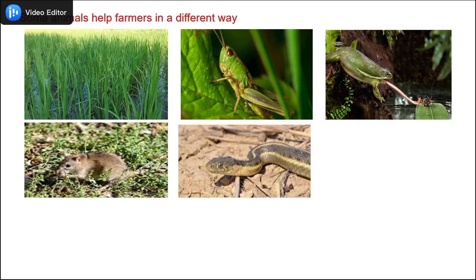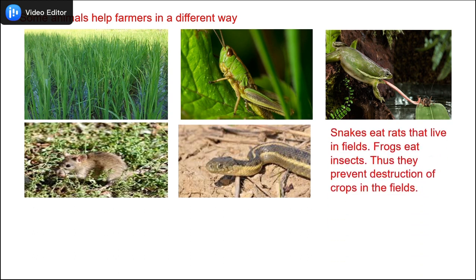Some animals help farmers in a different way. On your screen you can see the rice crops, the grasshopper, and the frog. Insects are great enemies of crops — they eat away and destroy them. Recently you must have seen the locust attack on various crops and trees. So frogs are a great help to farmers — they eat away these insects and protect the crops. Another great enemy of crops is the rat, which burrows into the fields and ruins the crops. Snakes present in the field eat the rats and protect the crops. So children, if you see a snake in the field, we should not kill it — at most, you can shoo it away.